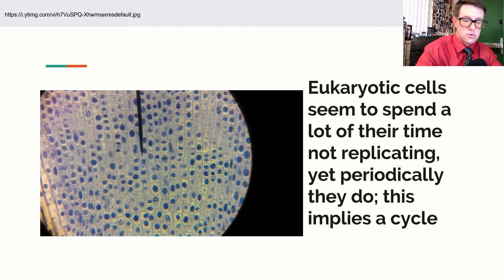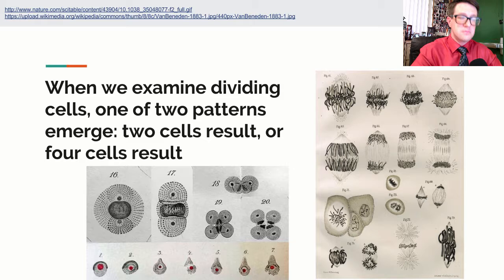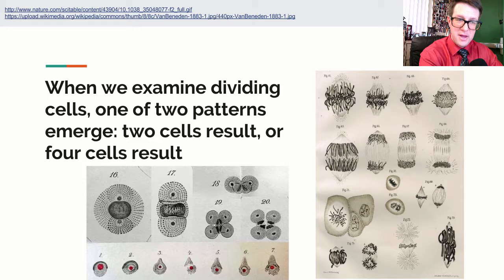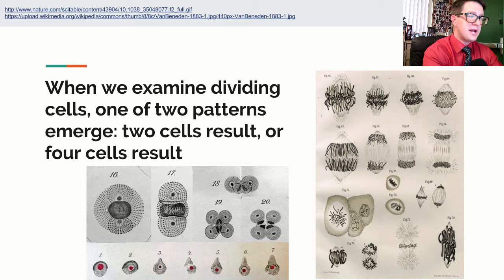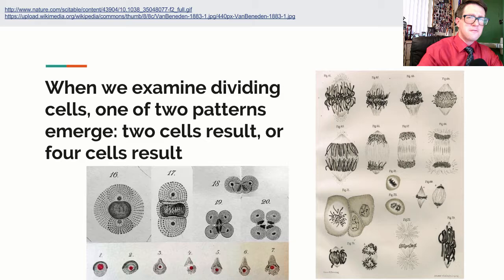Depending on where we look, we end up getting two different things, and different biologists in the 1800s got two different answers. On the right we have pictures from Walter Fleming, who we met yesterday. The other picture came from Van Beneden, who looked at a different organism and noticed not two cells forming but four cells. That begs the question of how that's happening. So clearly we have two different versions of this cell division going on — let's look at them one at a time.